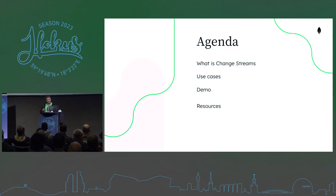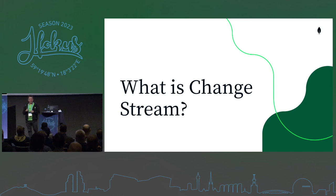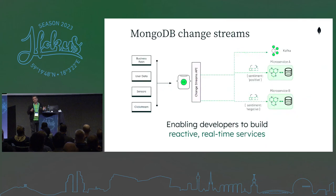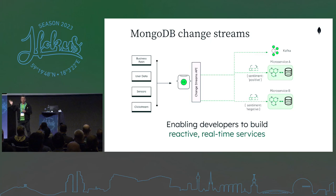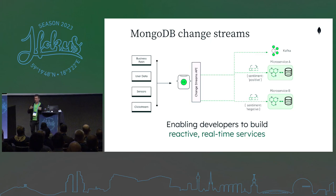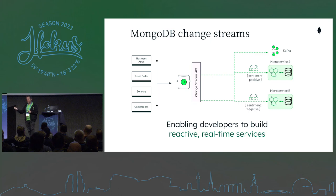So what is a change stream? MongoDB change streams are a way of listening to changes in your documents. If you have a relational database background — how many of you know about MongoDB? Awesome. So in MongoDB, every time you do a change to a document, for example insert, update, or delete something, you can listen to those changes and then trigger something to happen — a function or anything else.